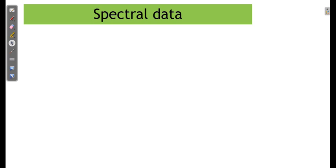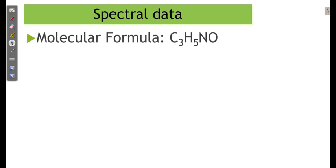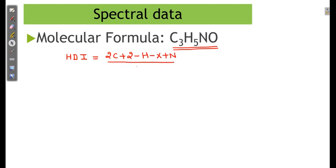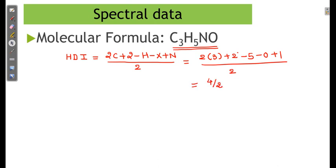The spectral data given to us has molecular formula C3H5NO. Based on this given molecular formula, we first find out HDI. HDI is equal to (2C + 2 − H − X + N) / 2. Based on this formula: (2×3 + 2 − 5 − 0 + 1) / 2 = 4/2 = 2. So HDI is equal to 2.